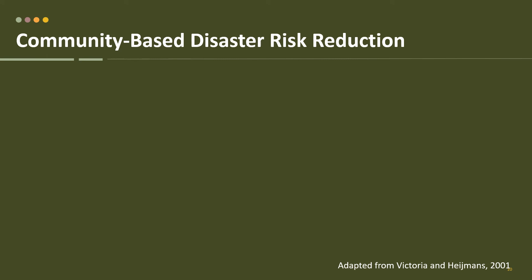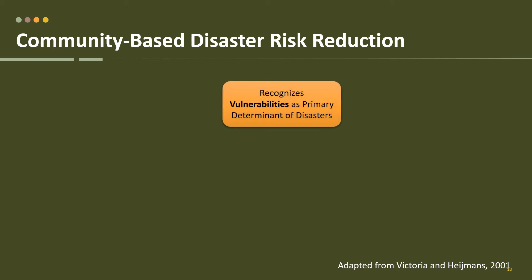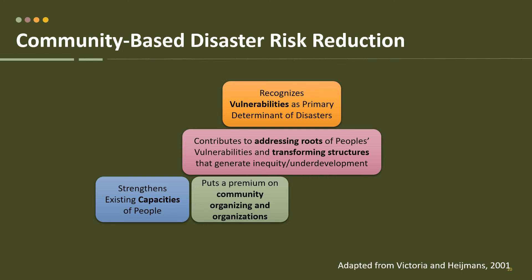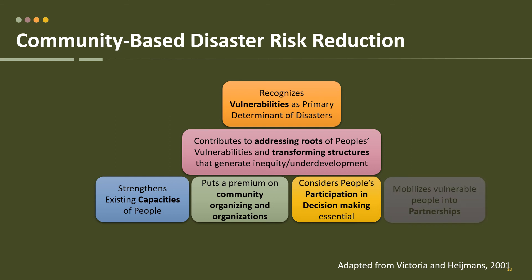From these basic DRR concepts and our concept of people-centered development, we now start developing the elements of community-based disaster risk reduction. CBDRR recognizes that vulnerabilities are the primary determinant of disasters. CBDRR contributes to addressing the roots of people's vulnerabilities and transforming structures that generate inequity and underdevelopment. It strengthens existing capacities of people, puts a premium on community organizing and organizations, considers people's participation and decision-making as essential, and mobilizes vulnerable people into different partnerships.